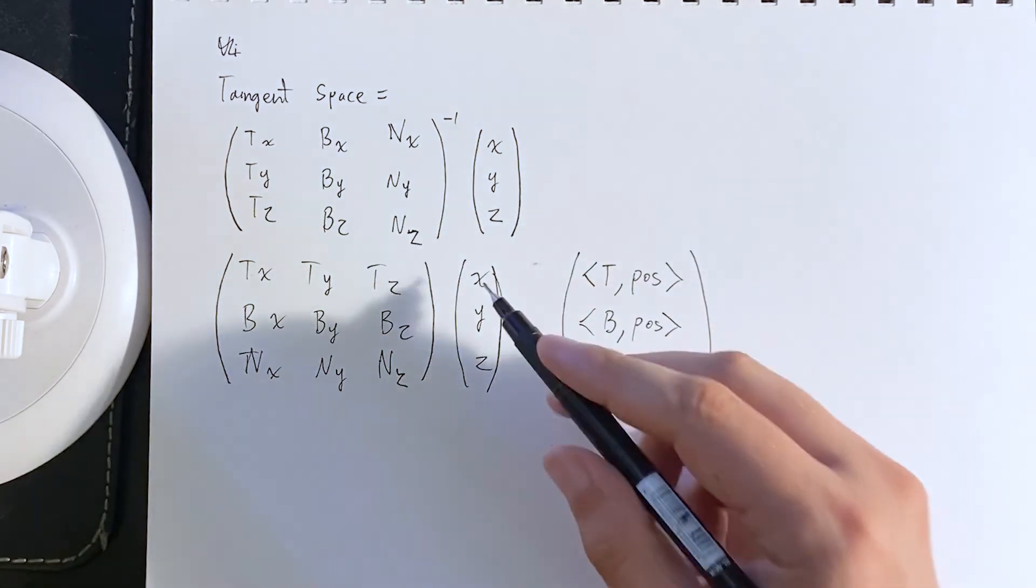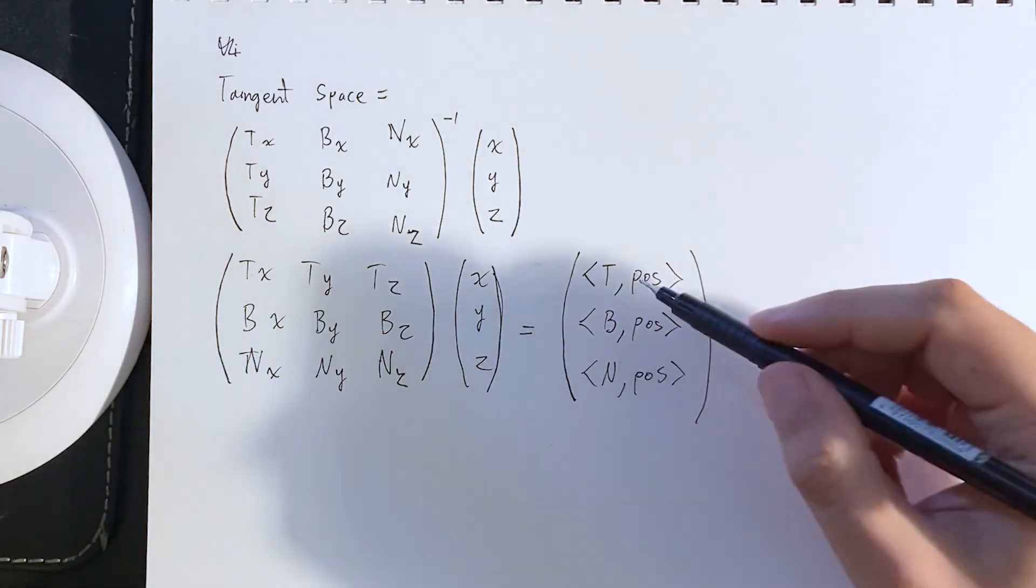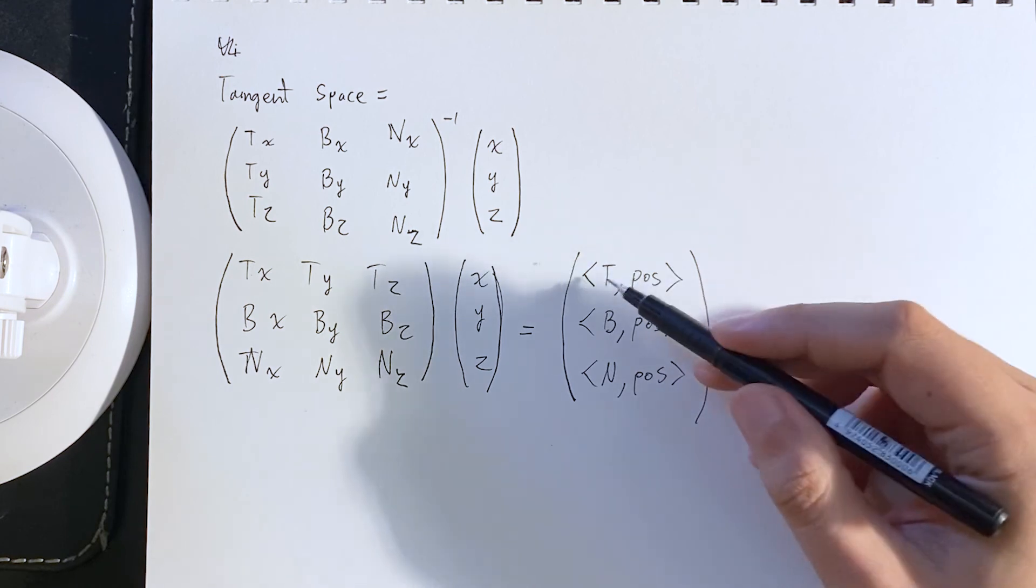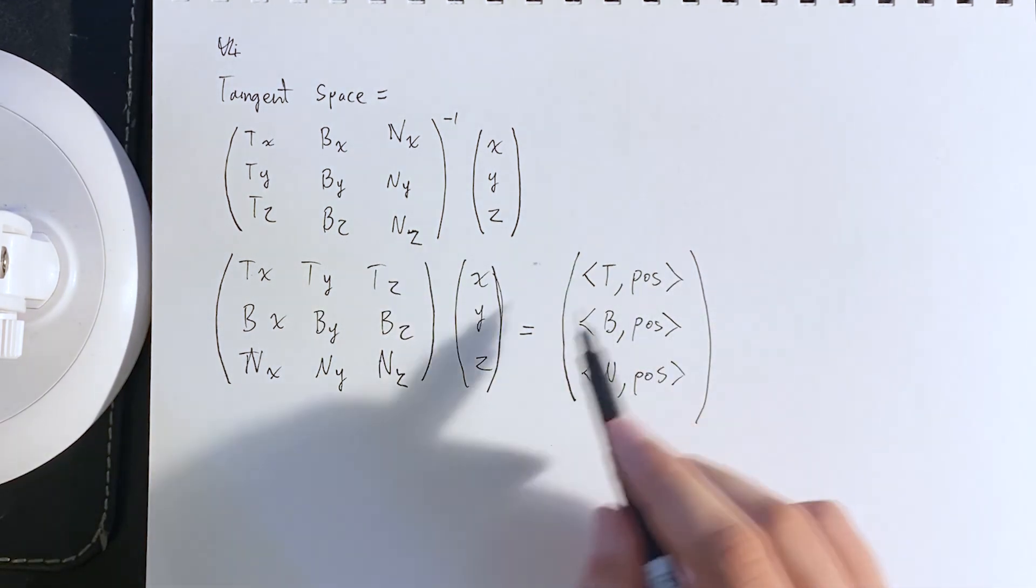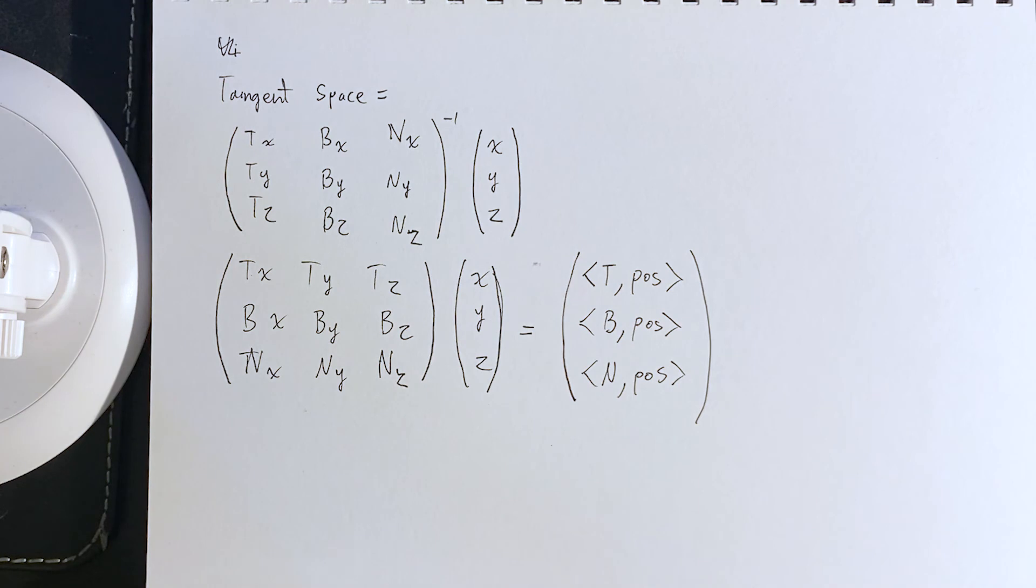So we can almost think about it like we take the position and we say how parallel is that with the tangent, how parallel is that with the bitangent, and how parallel is it with the normal. And it decomposes in that way. Anyway, I thought that was cool.